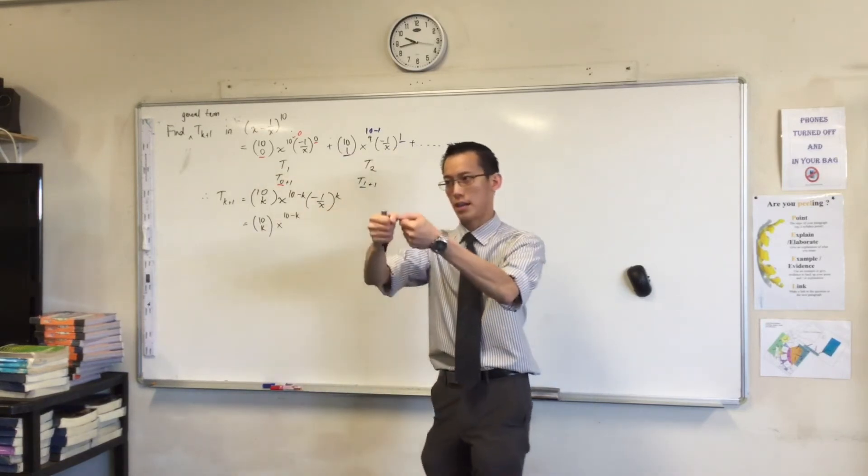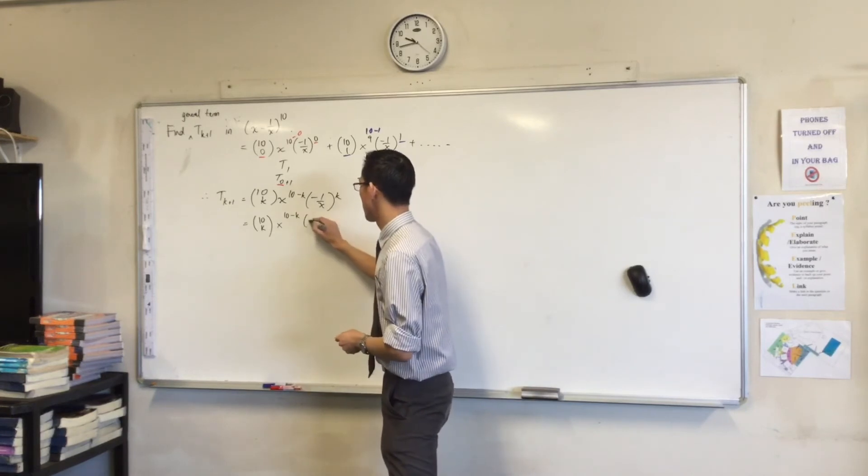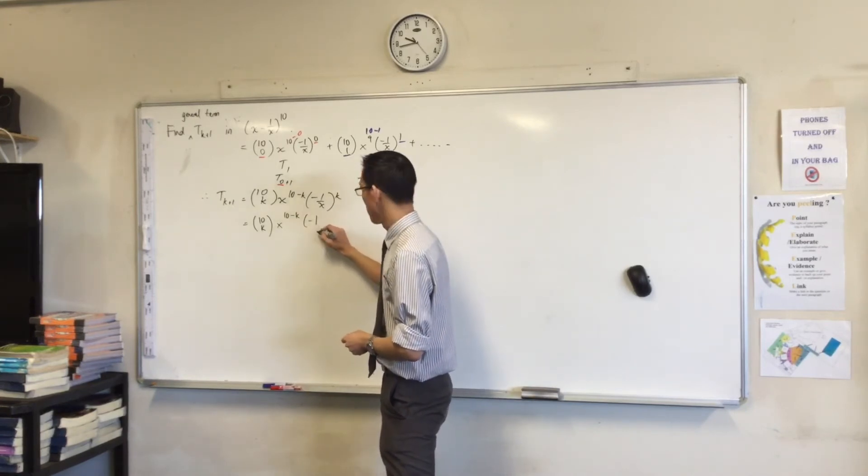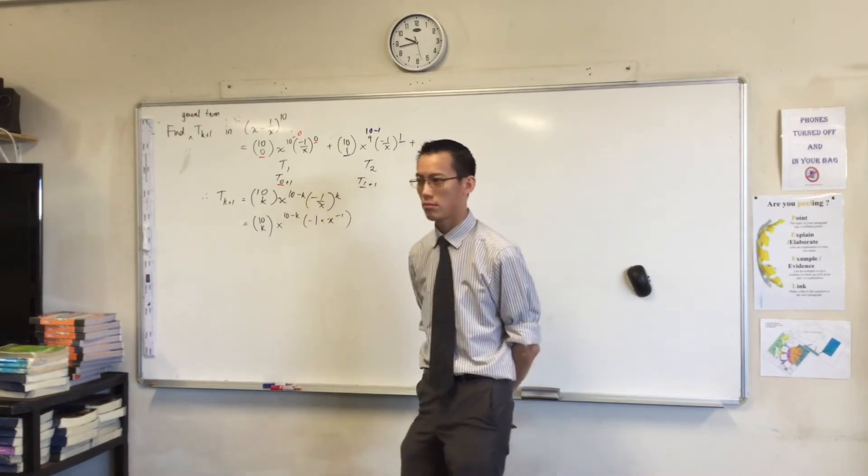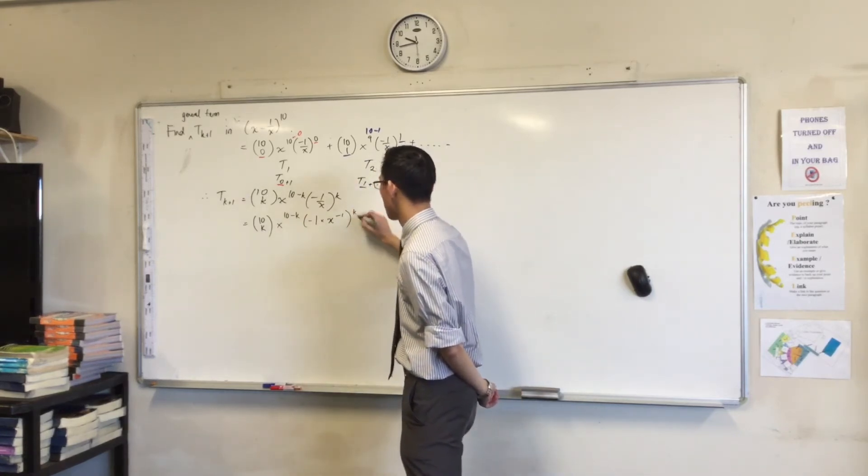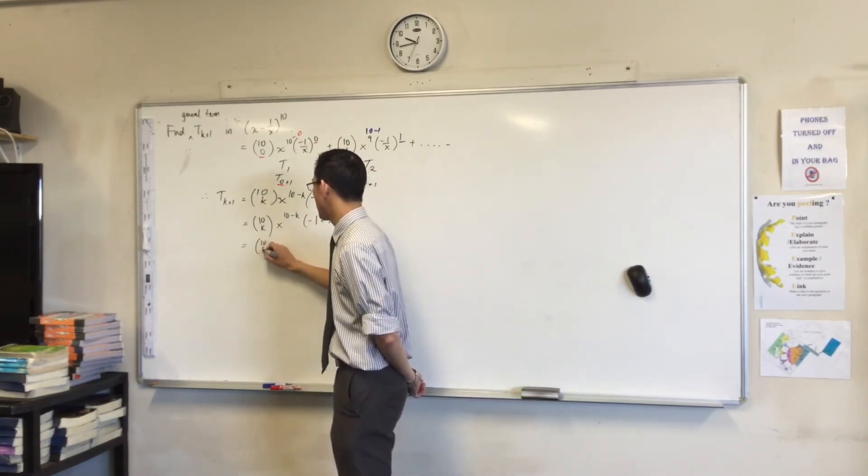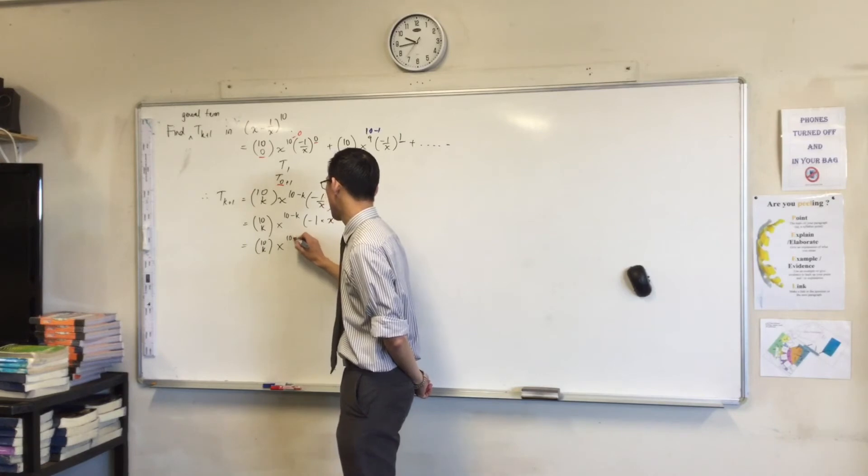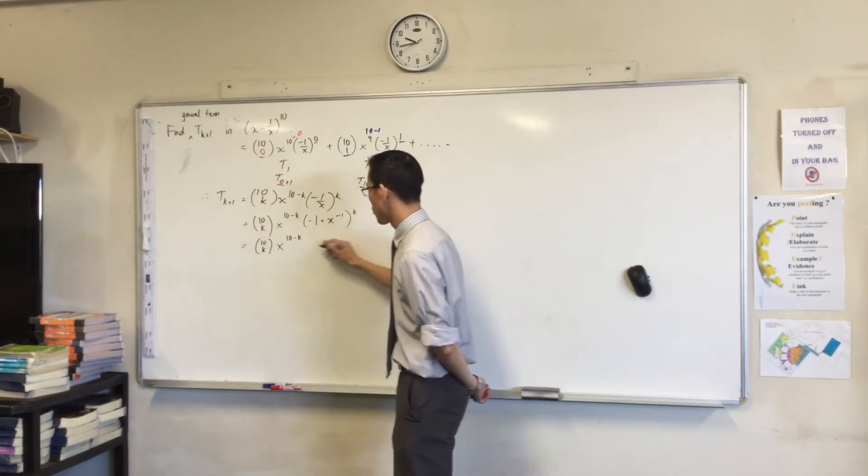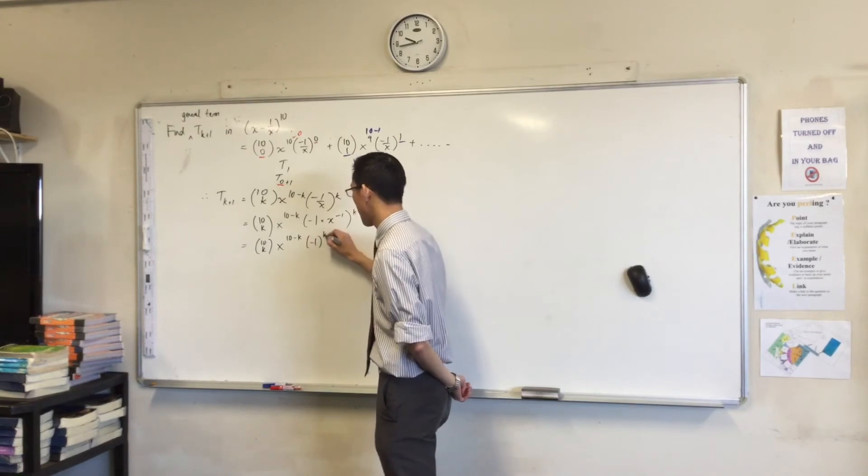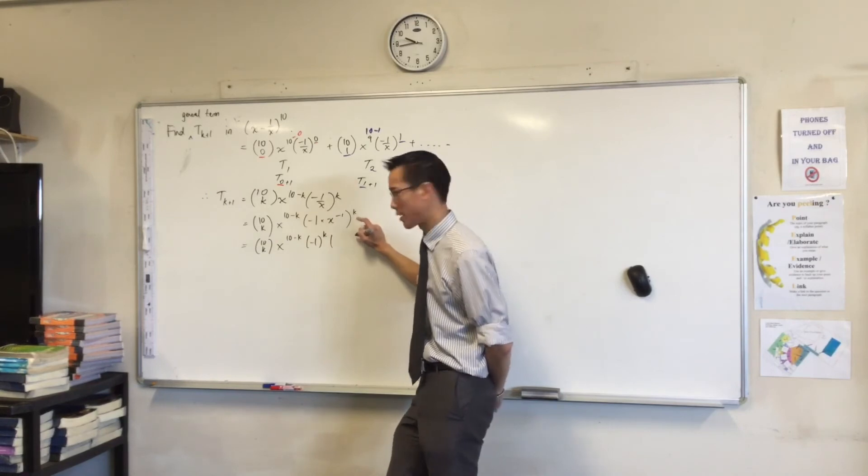This, I'm going to pull apart into two pieces. Do you agree that this is negative 1 times x to the negative 1? They both have a power of k. That means I've got 10Ck, x to the 10 minus k. The negative 1 gets raised to the power of k. And the x to the negative 1 also gets raised to the power of k.